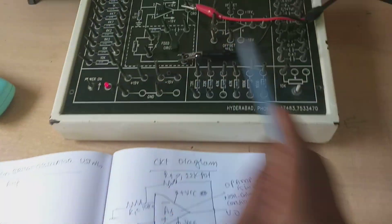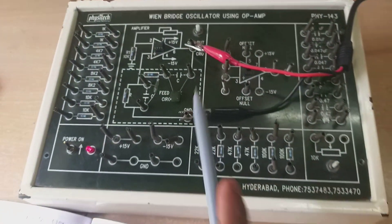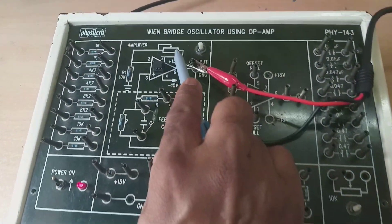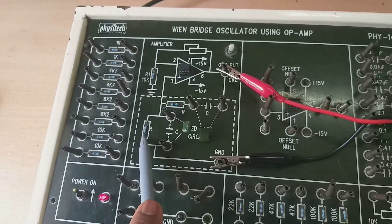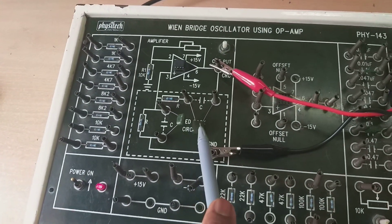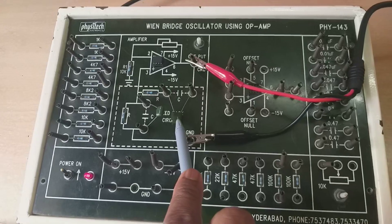Coming to the diagram. This is the 22 kilo ohms potentiometer, 10 kilo ohms. This is the 10 kilo ohms, 0.1 microfarad and 0.1 microfarad.